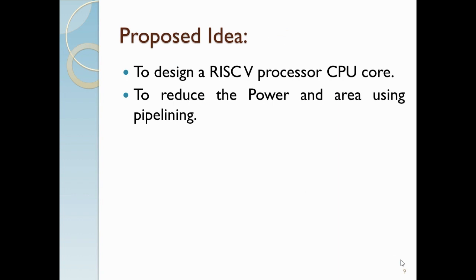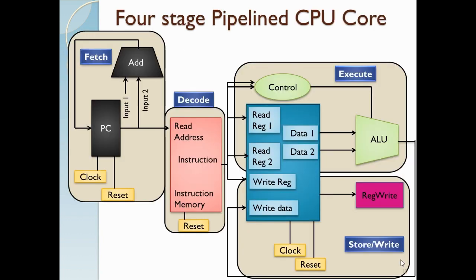Next is the proposed idea: to design a RISC-V processor's CPU core and to reduce the problem using the pipeline concept. The first option is a four-stage pipeline CPU core. In this four-stage design, when compared to five-stage and six-stage, we got a very less number of hazards, because in this four-stage we have one ALU in the execution unit.